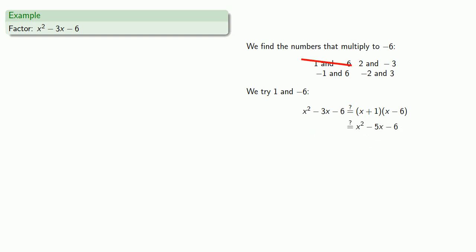Nope. We try 2 and negative 3. Nope. We'll try negative 1 and 6. Nope. And since negative 2 and 3 is the last possibility, it's got to work. Nope.